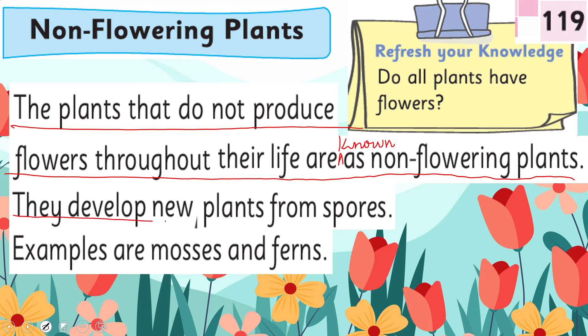Non-flowering plants develop new plants from spores. Examples are mosses and ferns. These plants do not have flowers in their lives, and instead of seeds, they reproduce through spores.